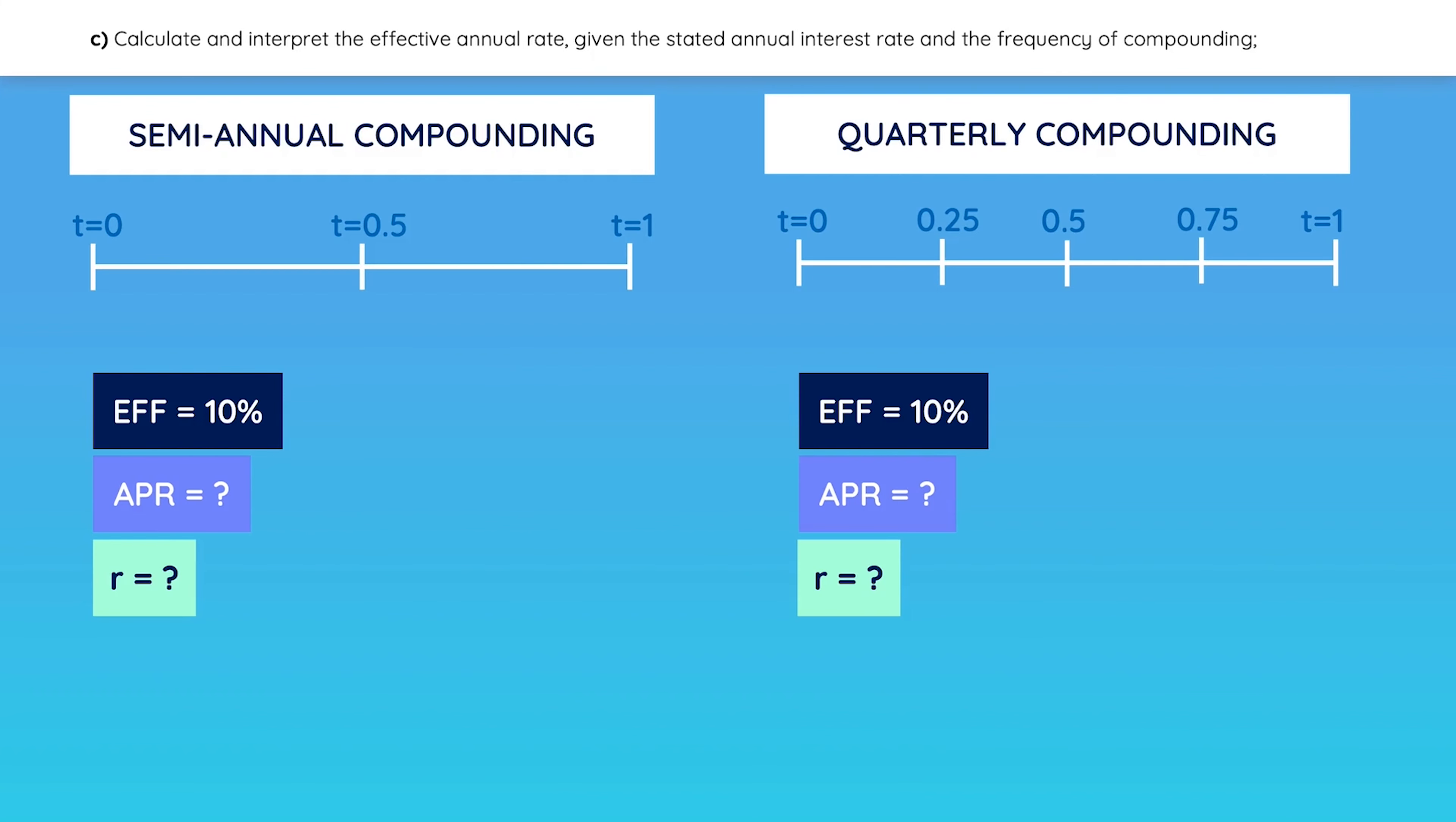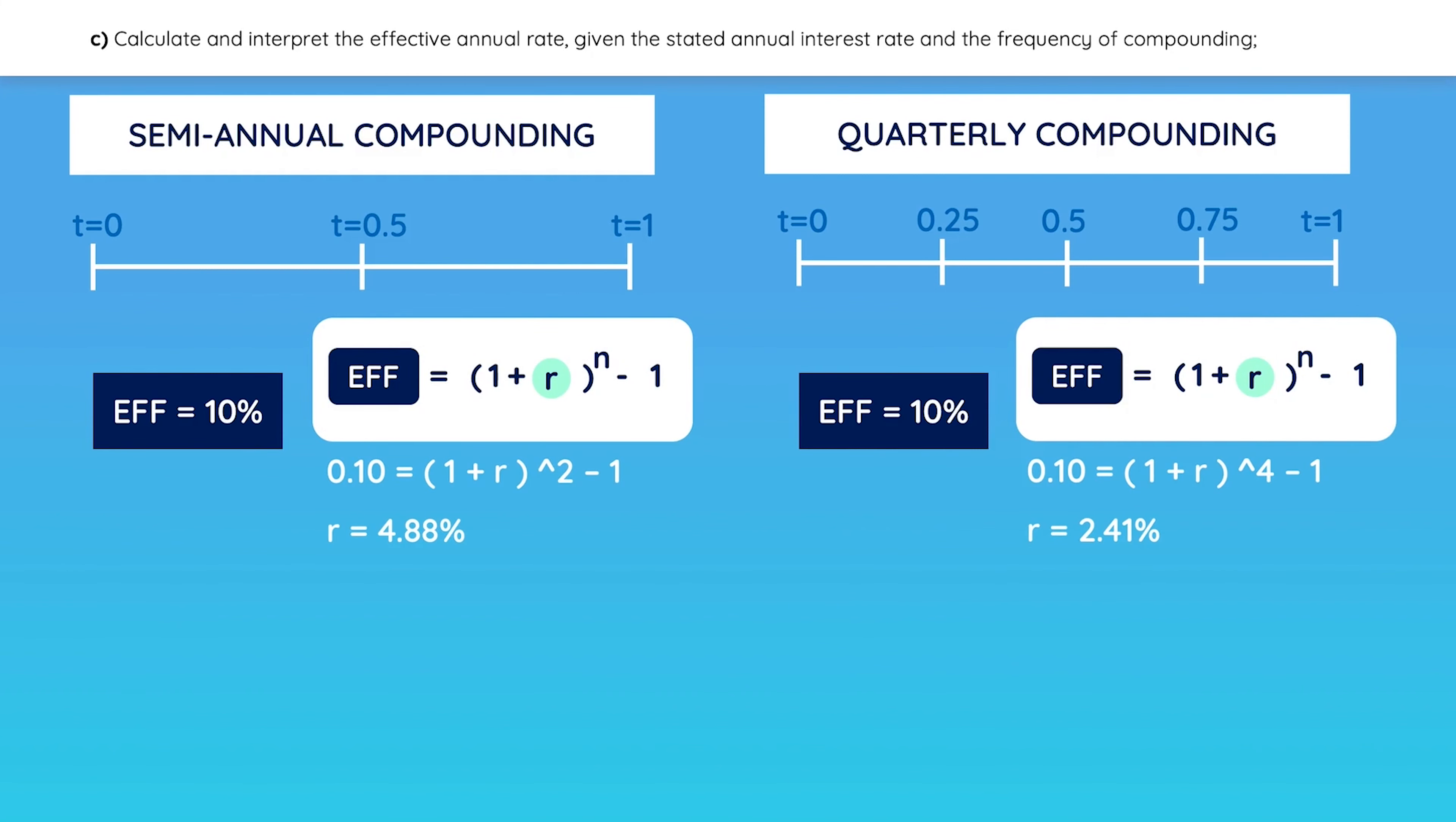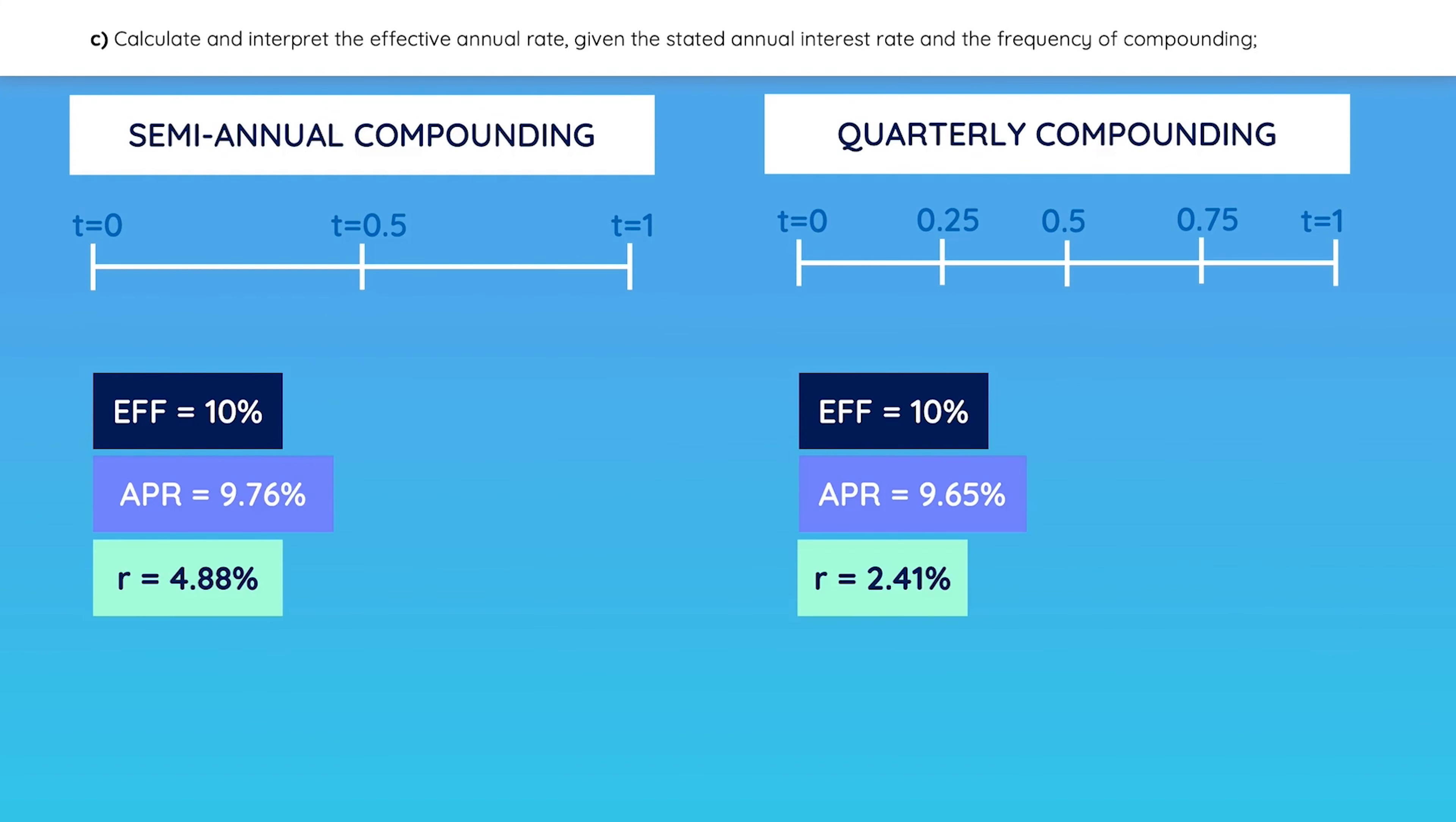First, let's find the periodic rates by solving for R in this equation. Once you have the periodic rates, you can multiply them by the number of periods to get the APR. Here are the solutions. You should also remember that as compounding frequency increases, the stated annual rate gets smaller, while the effective rate gets larger.